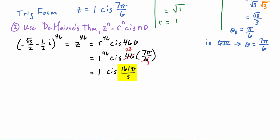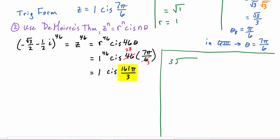We just reviewed how to do that, so let's divide three into 161. Three goes into 16 five times; five times three is 15, subtract to get 1. Bring down the 1 to get 11; three goes into 11 three times; three times three is nine, and we have a remainder of two. So 161π over three equals 53 whole pi's plus two pi over three.